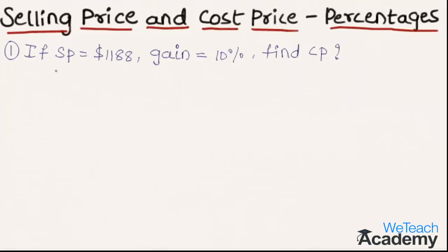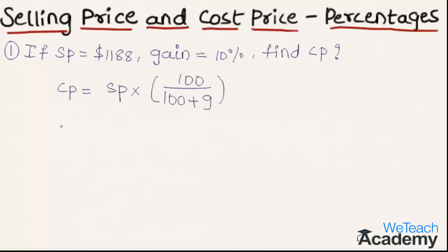In this example, the selling price is $1,188 and the gain is 10%. We have to find the cost price. We know that when gain percentage is given, the formula to find the cost price is: Cost Price = Selling Price × 100 ÷ (100 + Gain%).